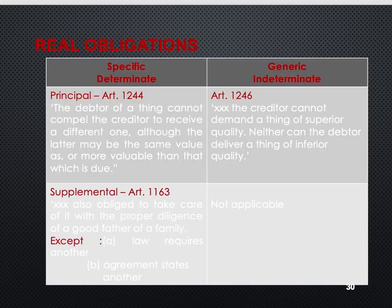We have different types of real obligations. First, we have specific determinate and generic indeterminate. In specific determinate, found in Article 1244, the debtor of the thing cannot compel the creditor to receive a different one, although the latter may be of the same value or more valuable than that which is due.